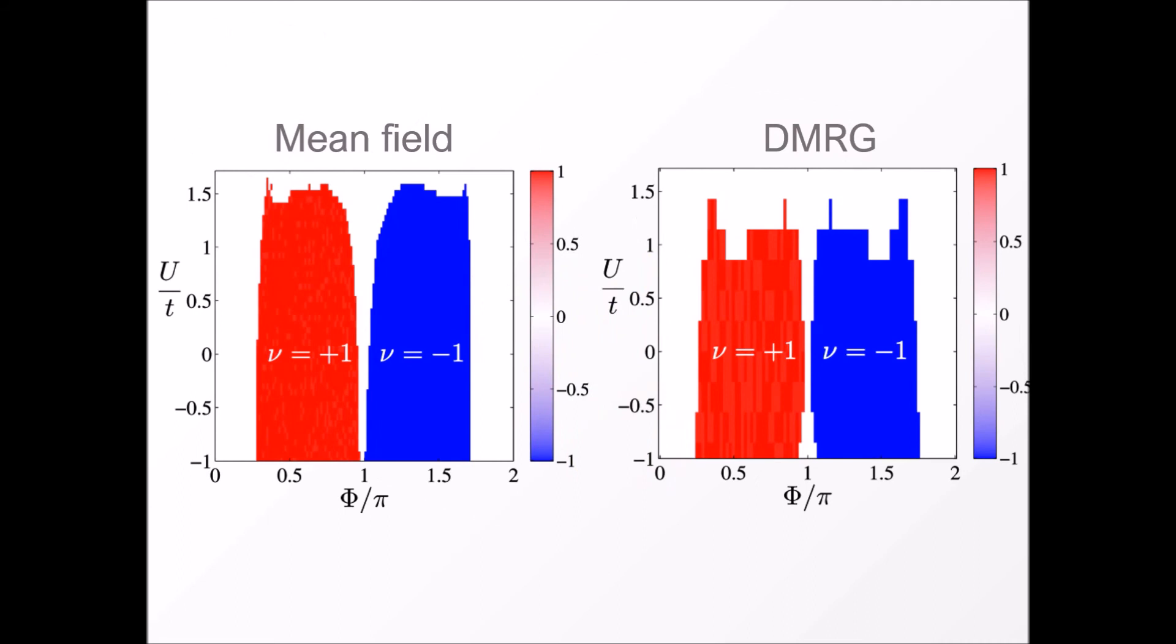We explicitly evaluate the winding number that can take values plus one, zero or minus one, for a wide range of couplings. This we do both numerically, with a DMRG simulation, and analytically, with a mean field theory. In these plots, Φ is the complex phase in the hopping amplitudes of the Haldane model, and U is the strength of interactions between fermions. We observe that both the numerical and analytical results are in good agreement.